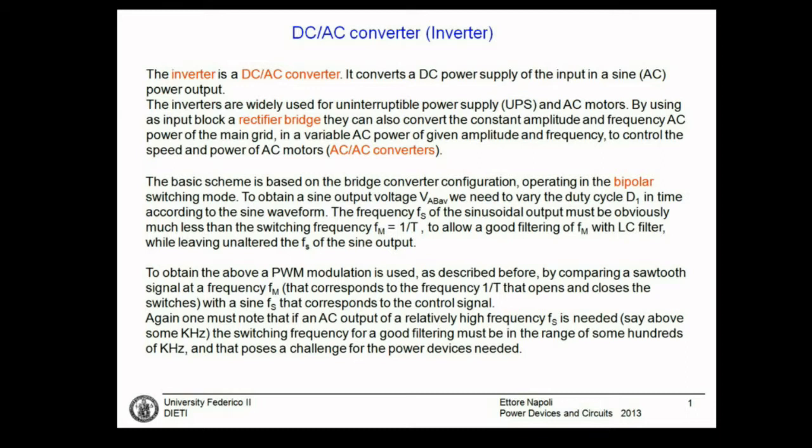If this series of pulses with variable size is filtered with an LC filter — using the inductance of the motor or in other ways — in the end you get the main component, the main harmonic component. The average value is zero; the first harmonic component is the sinusoidal output waveform, and the rest is filtered out.